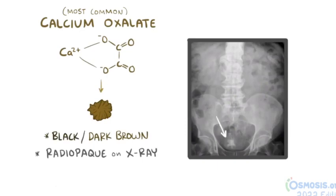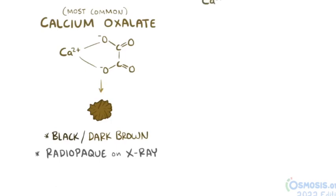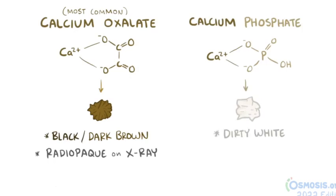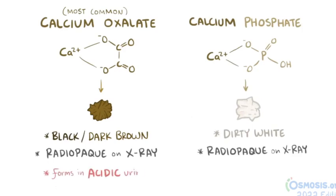Sometimes, instead of oxalate, the calcium binds a negatively charged phosphate group to form calcium phosphate stones, which are dirty white in color and also radio-opaque on an x-ray. Calcium oxalate crystals are more likely to form in acidic urine, whereas calcium phosphate crystals are more likely to form in alkaline urine.